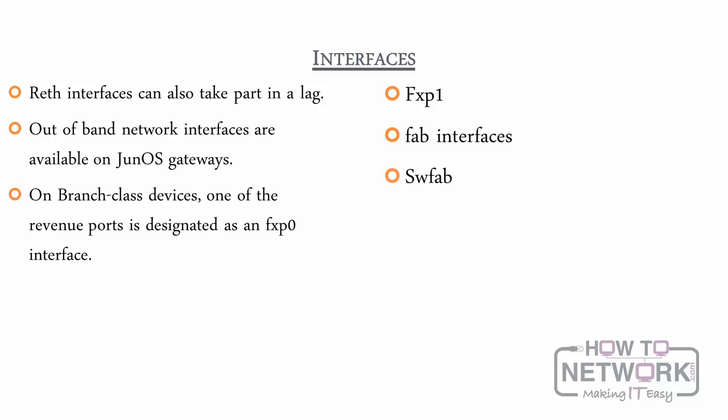SWFAB interfaces are like FAB interfaces but are used as switching interfaces in an HA environment. Switched fabric probes are used to monitor the interfaces, and if too many are lost, the nodes move to separate switching domains. This does not break the cluster as long as FXP1 and FAB links are working.